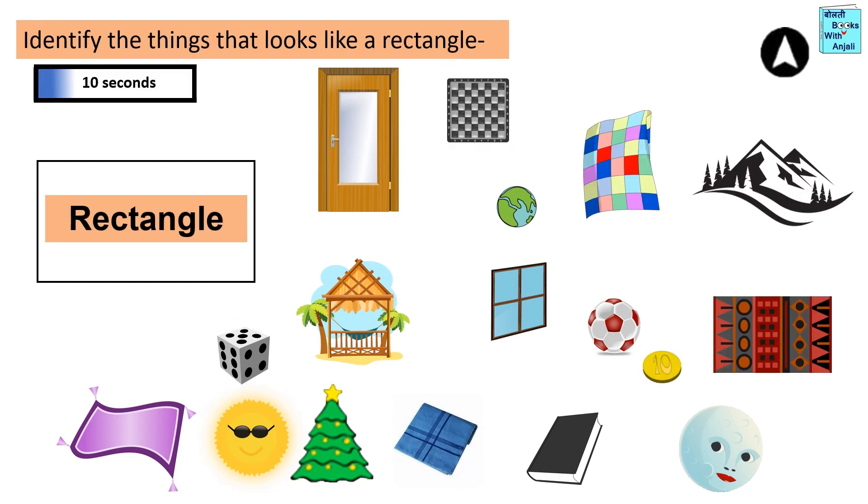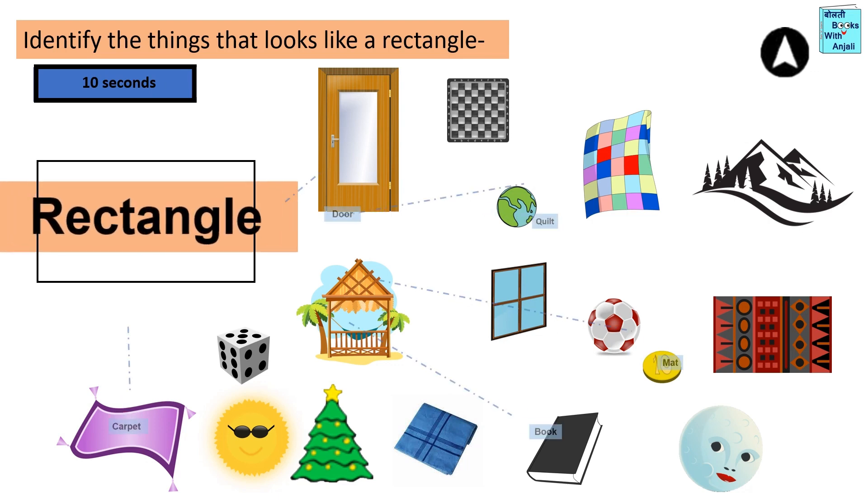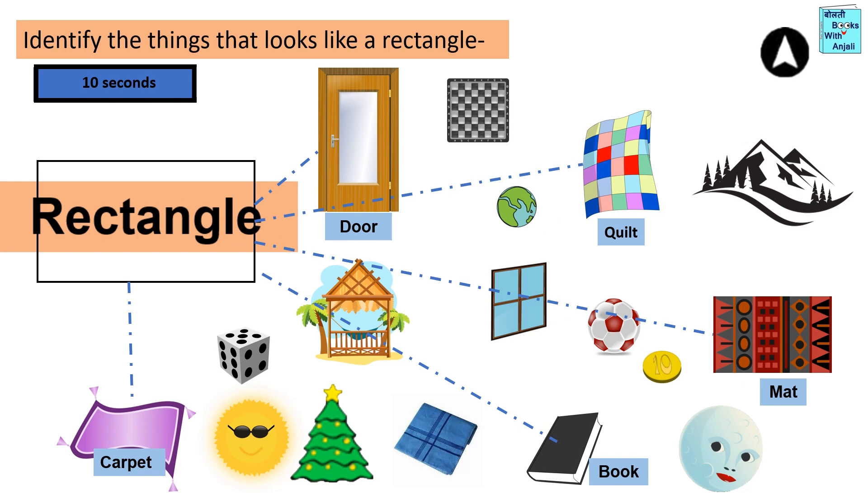Identify the things that look like a rectangle. Rectangle shaped things are door, quilt, mat, book, and carpet.